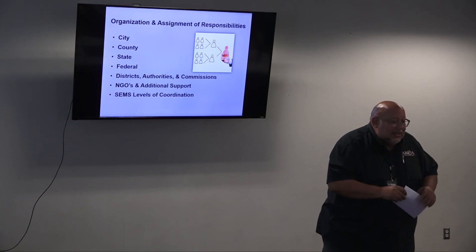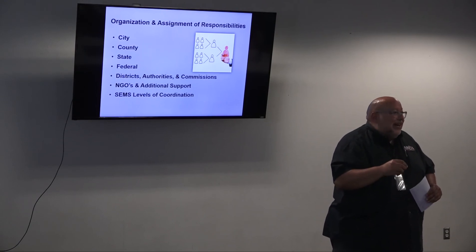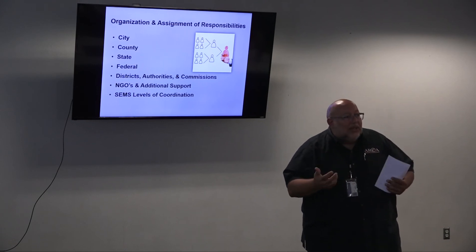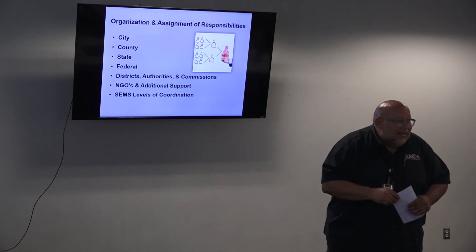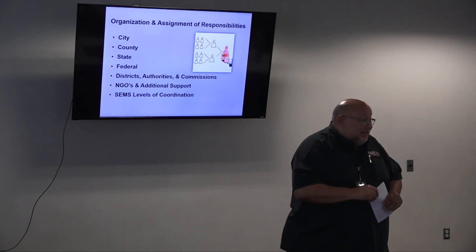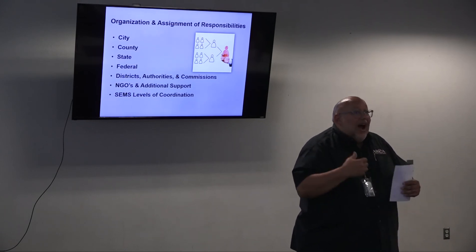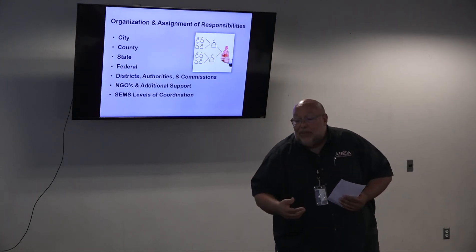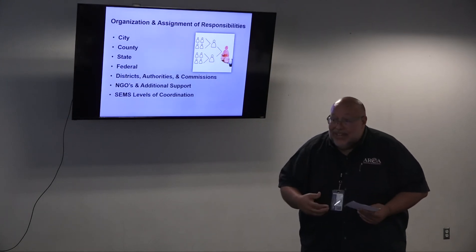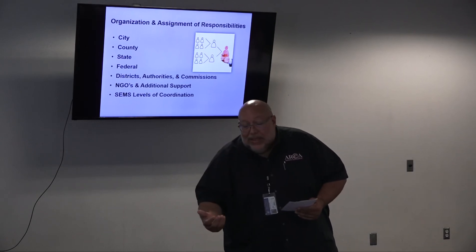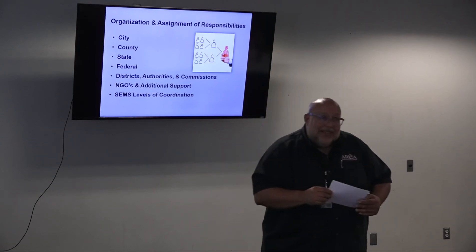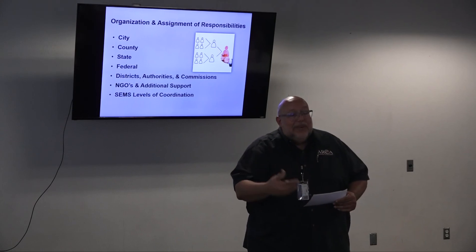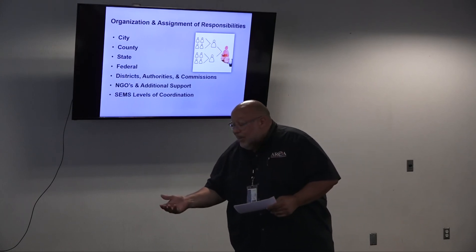An important part: make sure you define how costs are going to be covered. Unfortunately, goodwill is free but paper towels cost money. How are we going to recover these costs? Define that in the MOU and come to a clear understanding of who is covering what. It's a way to make sure you can recover costs if you get federal or state assistance later.